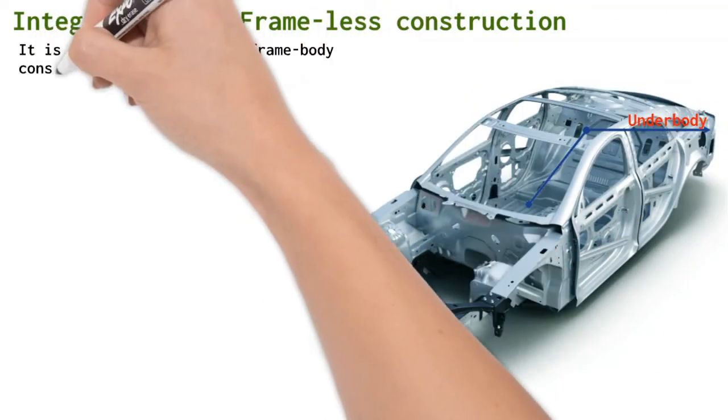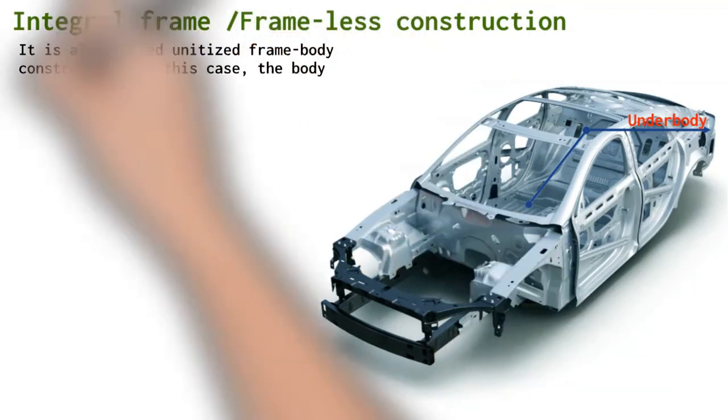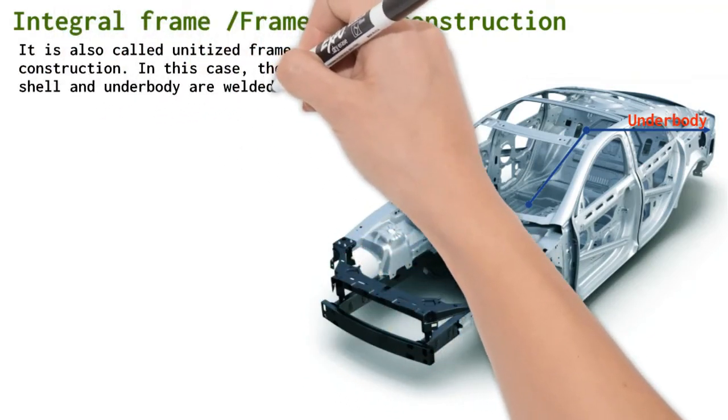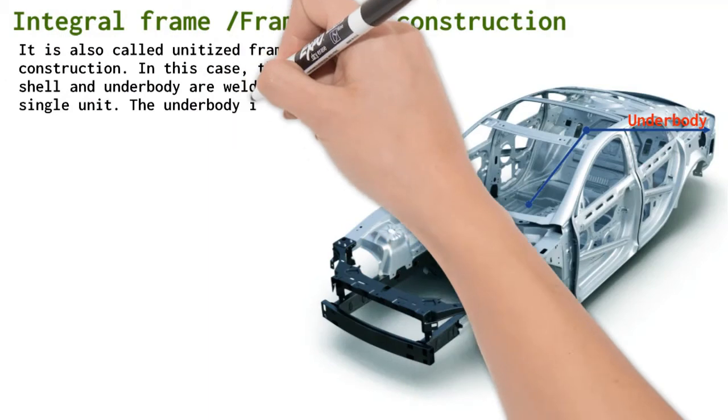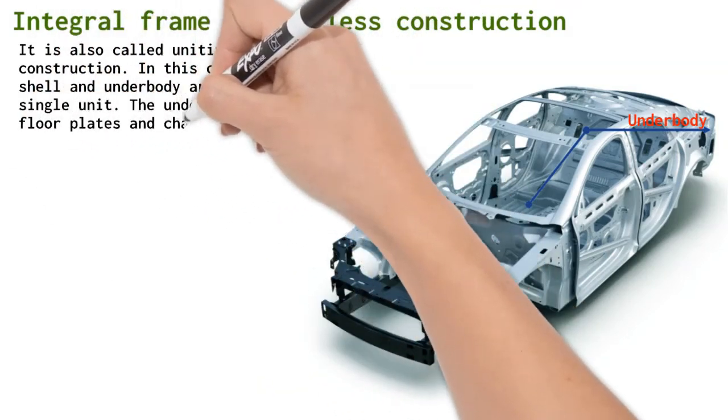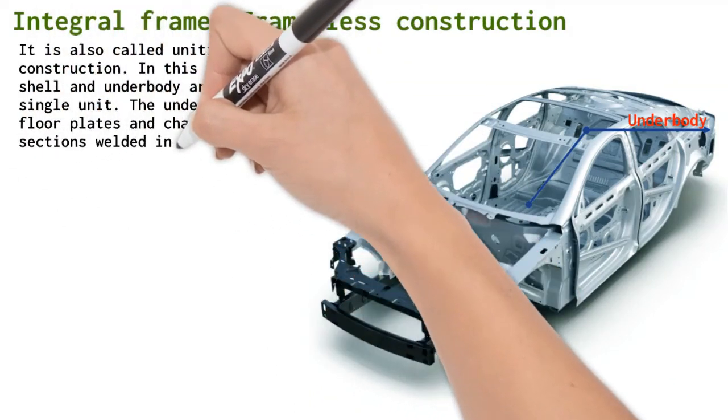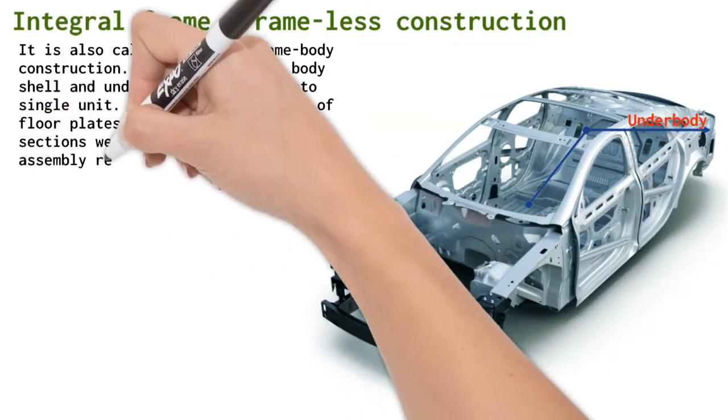In this case, the body shell and underbody are welded into a single unit. The underbody is made of floor plates and channels and box sections welded into a single unit. This assembly replaces the frame.